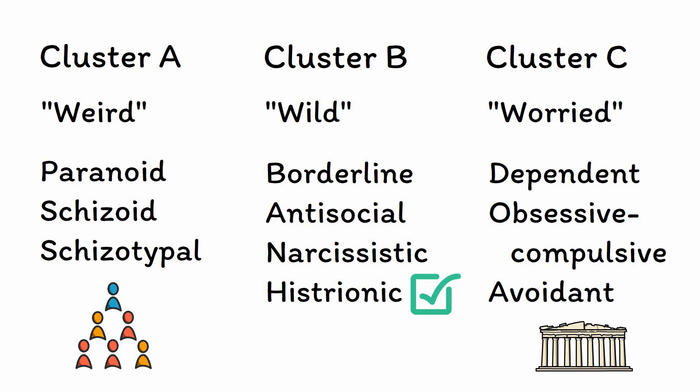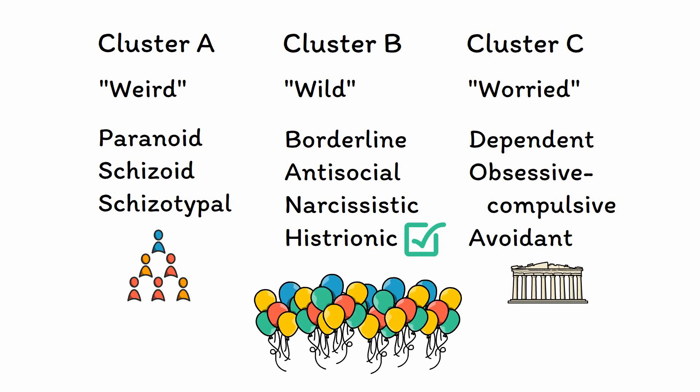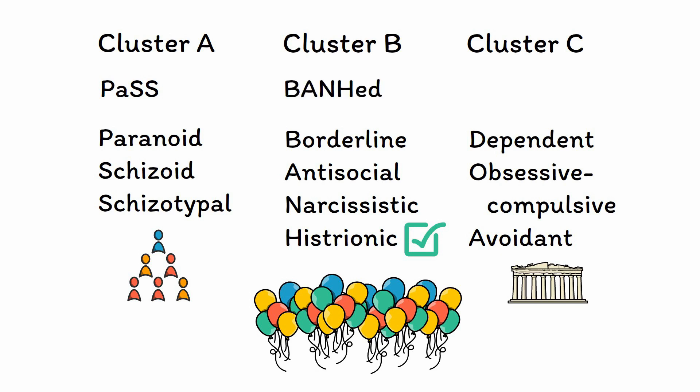You can remember these categories by thinking of what would happen if you were to invite people from each cluster to a party. Cluster A will want to pass on the invitation, as people with these disorders tend to shy away from social interaction. Cluster B will come to the party, but they run the risk of being banned from future parties for engaging in overly emotional, self-centered, manipulative, or even aggressive behavior. Finally, Cluster C will join as well, but the party will be DOA — dead on arrival — given their tendency to drag down the spirit of the event with their highly anxious and neurotic behavior.